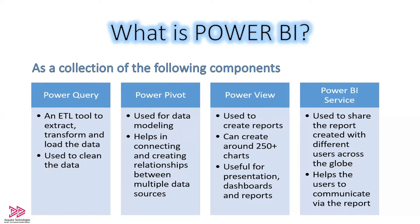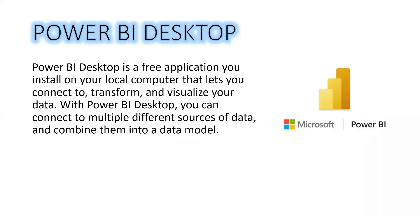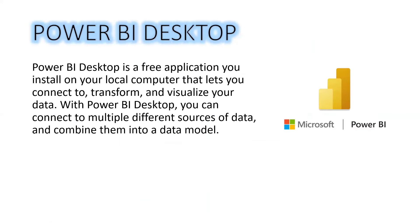So these are the four components of Power BI: Power Query for ETL, Power Pivot for data modeling, Power View for creating visualizations, and Power BI Service for collaborating and sharing reports with end users. The first three components — Power Query, Power Pivot, and Power View — are available in the software known as Power BI Desktop. Power BI Desktop is a free application you can install on your local computer that lets you connect, transform, and visualize your data by connecting to multiple data sources and combining them into a data model.